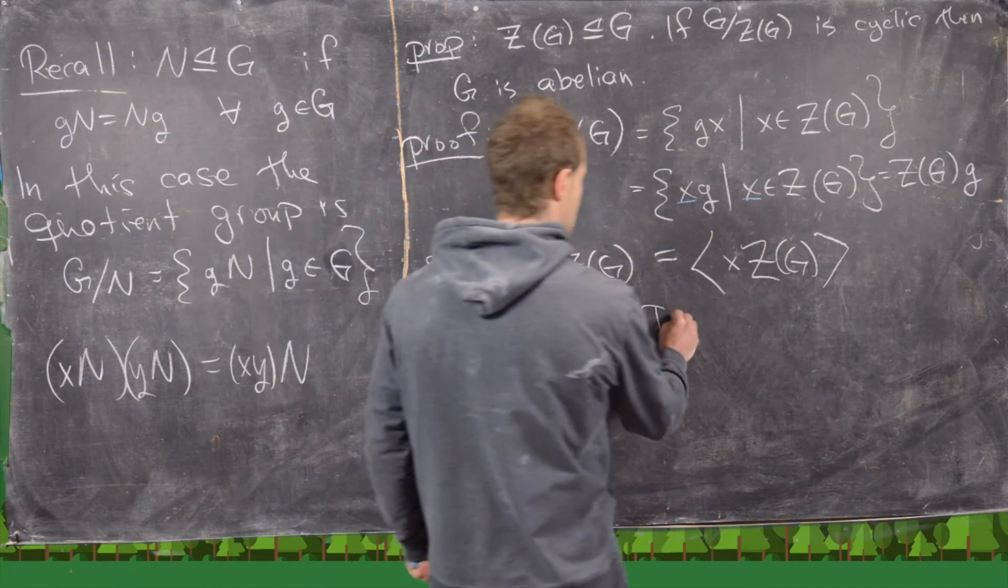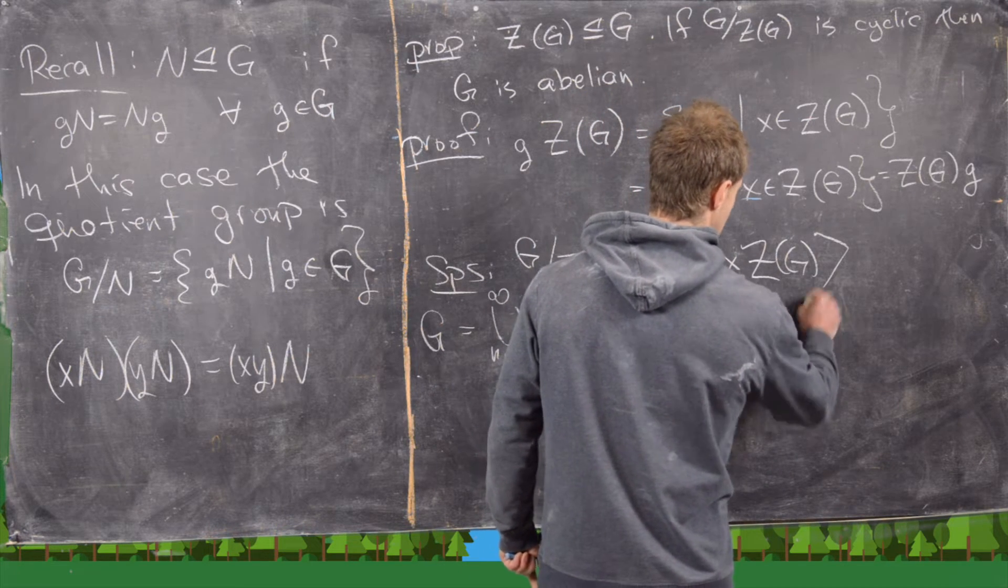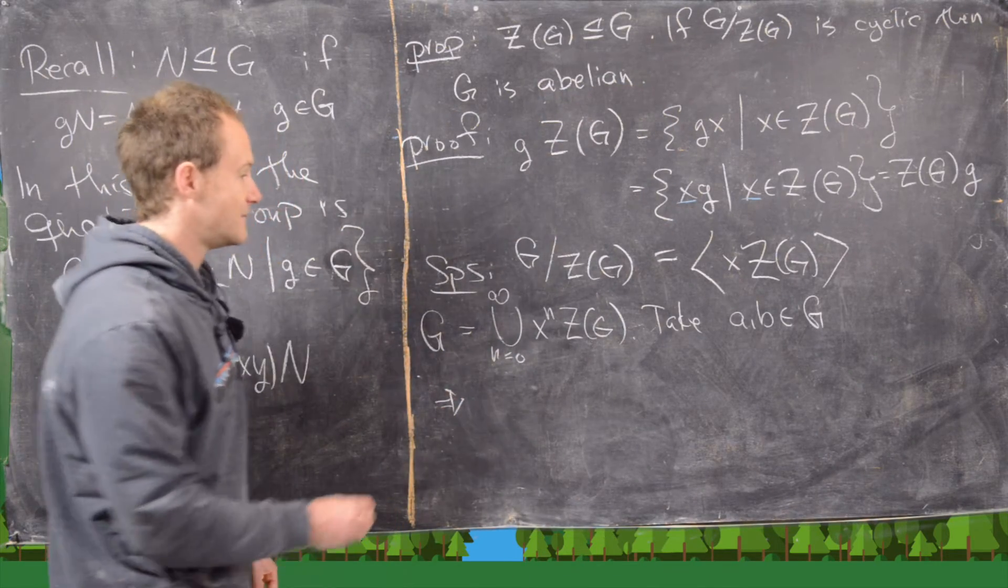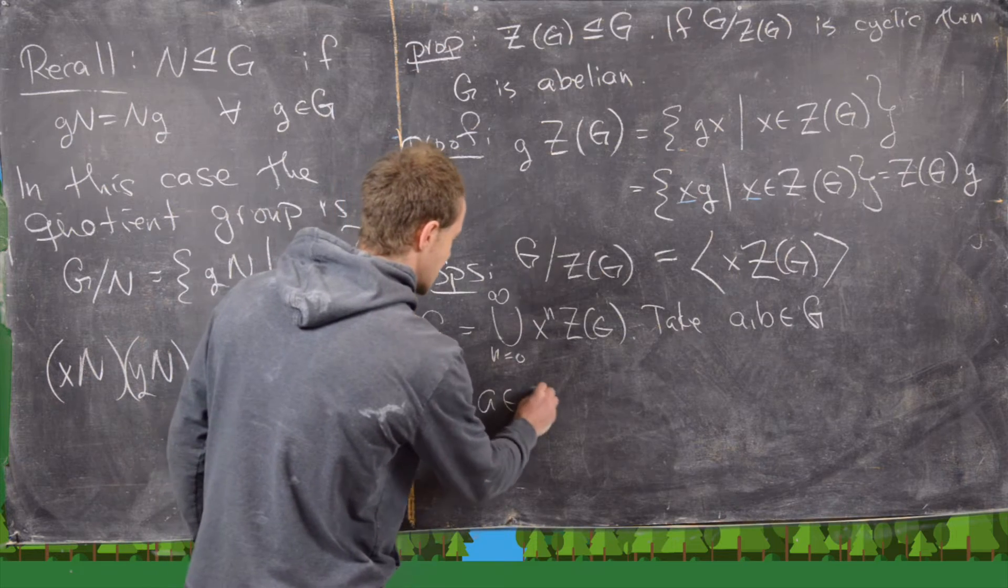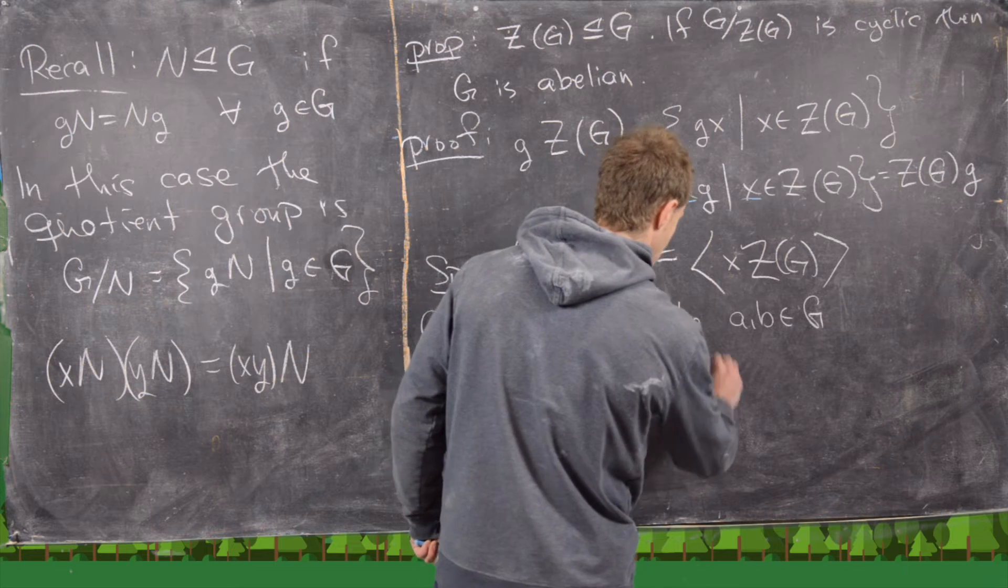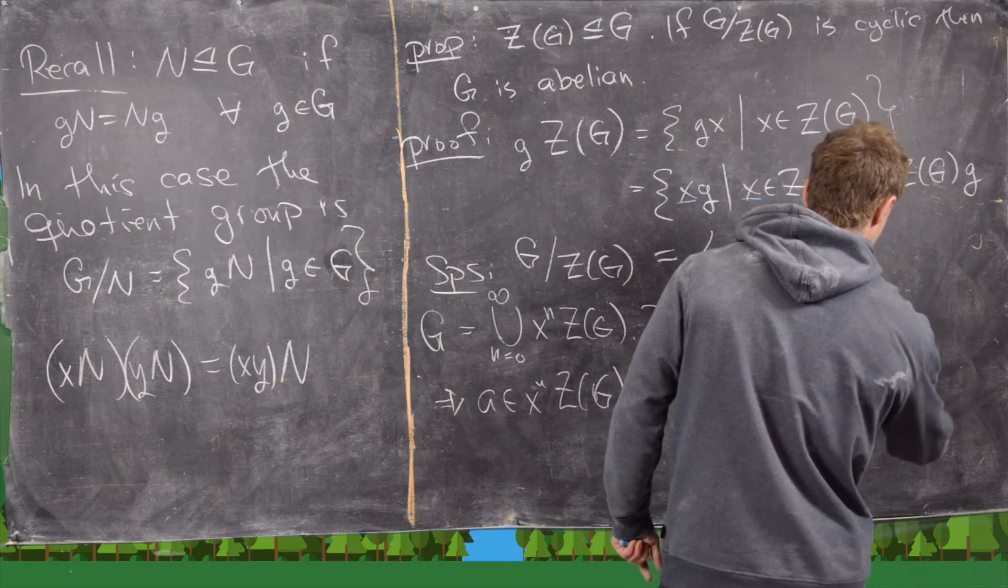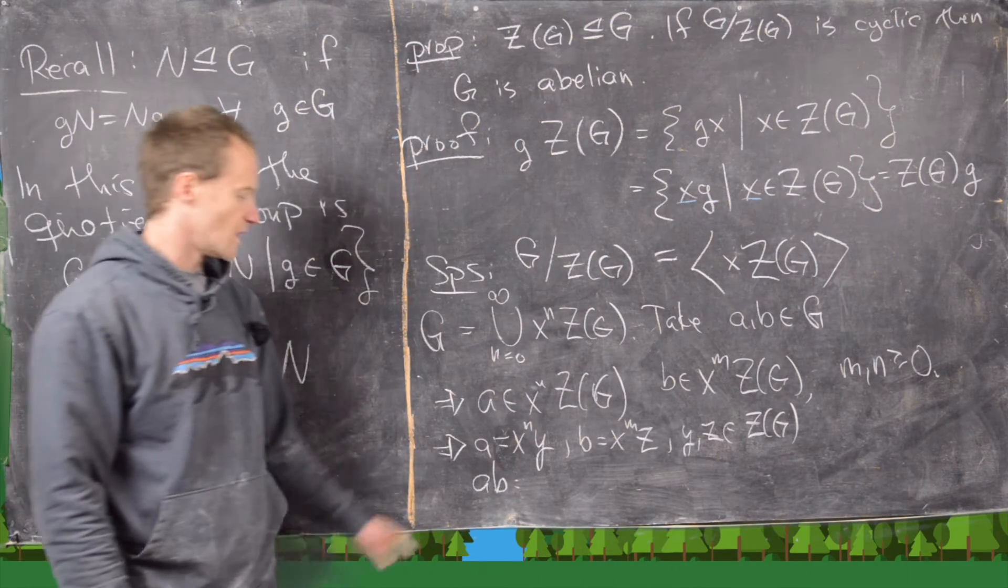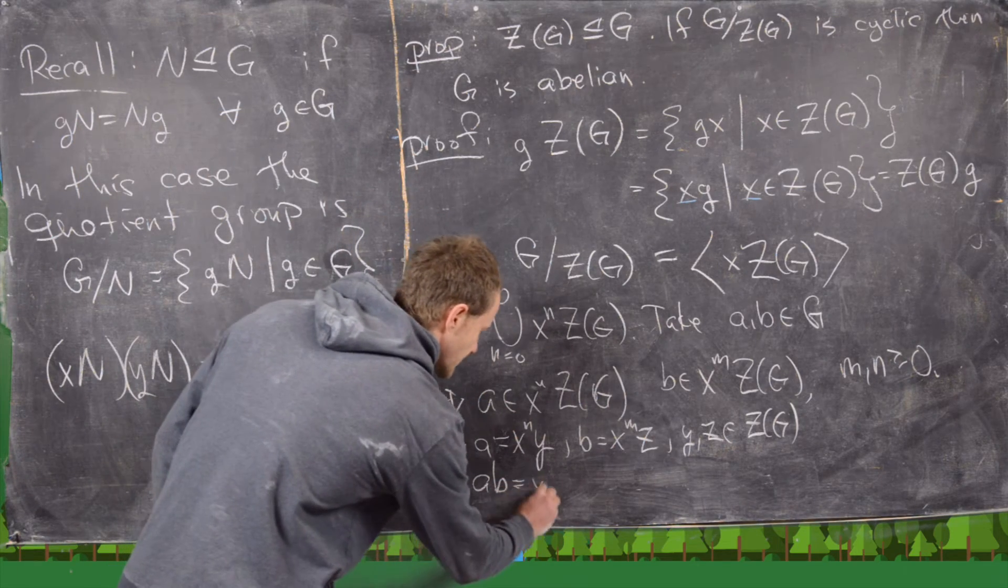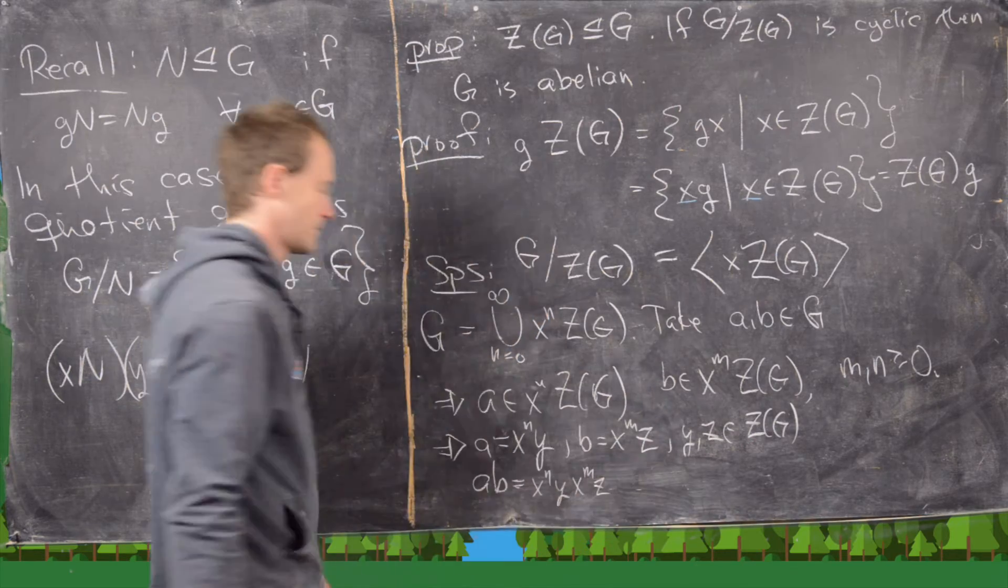So now let's take A and B in G, and notice that that means A is in X^N Z(G), and B is an element of X^M Z(G), and this is for some M and N greater than or equal to 0. Okay, so now we can write this down in terms of what we have above. So this is going to be X^N Y times X^M Z.